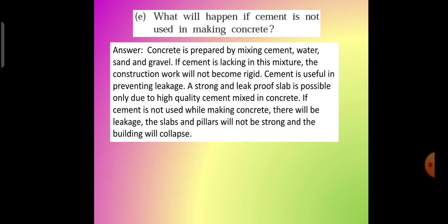Cement is useful in preventing leakage. A strong and leak proof slab is possible only due to high quality cement mixed in concrete. If cement is not used while making concrete, there will be leakage. The slabs and pillars will not be strong and the building will collapse.